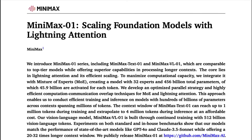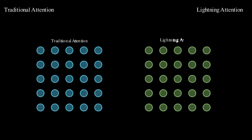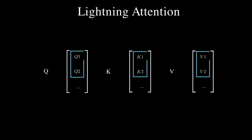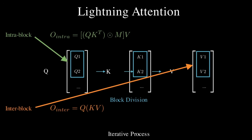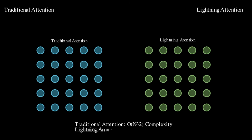Lightning attention is faster than traditional attention. It mitigates the issue with Transformers, which is the need to compute attention scores for every pair of tokens — hence the quadratic complexity. Instead of scaling quadratically, lightning attention uses a combination of linear algebra techniques to compute things linearly, meaning it doesn't require a lot of compute and fits in memory very well.